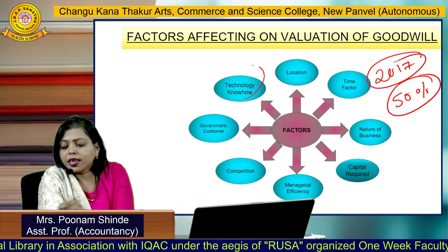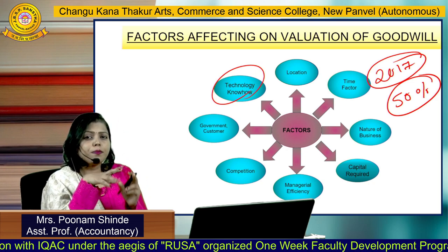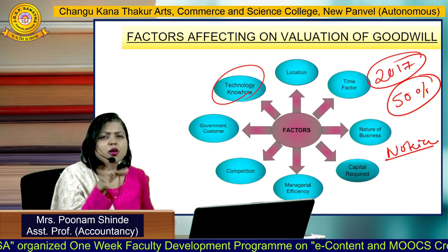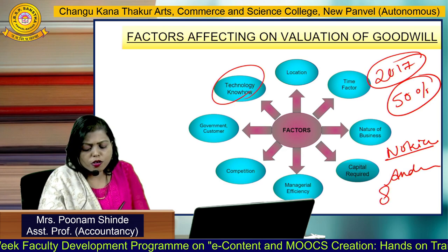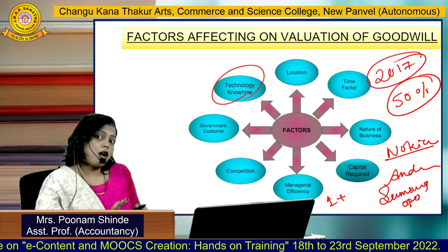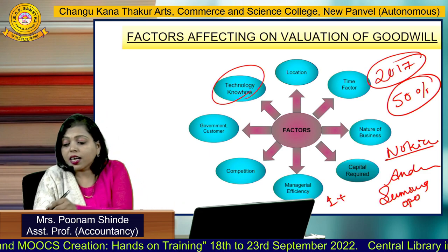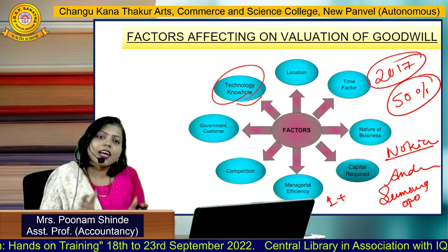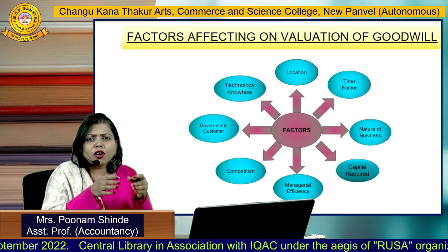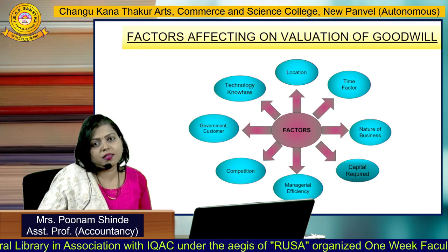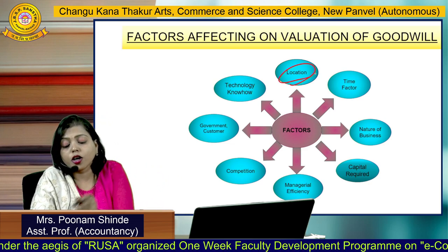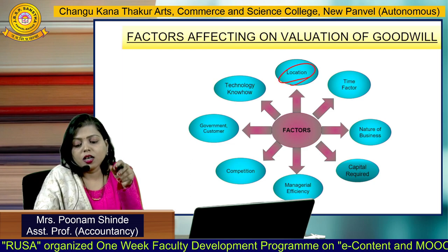Technology know-how is another key factor. Take Nokia — it was once the largest mobile brand, everyone had a Nokia phone, but now everyone uses Android devices like Samsung, Oppo, or OnePlus. Nokia lost the market because they did not learn or adopt new technology. Technology know-how means accepting new technology as it comes and applying it to your business. This significantly affects your goodwill.